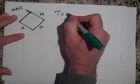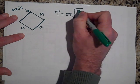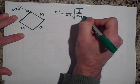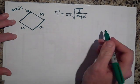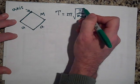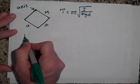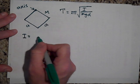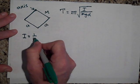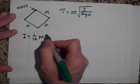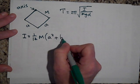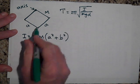Okay, here we are. The period is 2 pi times the square root of I over MGD. I got to get I now. If you look in the back of your book, I for a rectangle is one twelfth M times a squared plus b squared. But both our sides are a, so that would just be two a squared. So I is equal to one sixth M a squared.